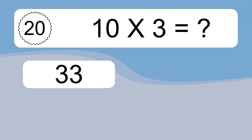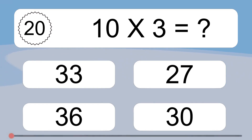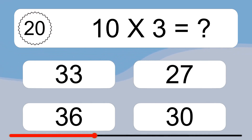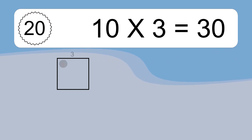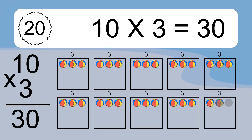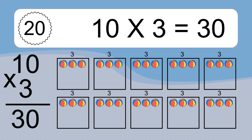10 times 3 equals what? 10 times 3 equals 30. We have 10 boxes, and each box has 3 colorful balls inside. If you count all the balls in all the boxes together, you will have 10 times 3 balls. This equals 30 balls.